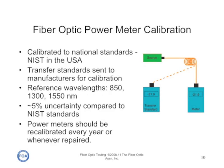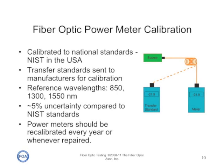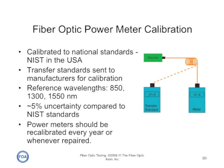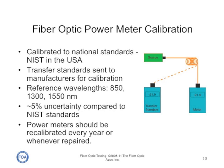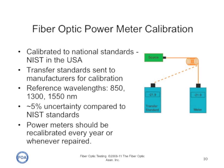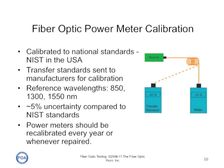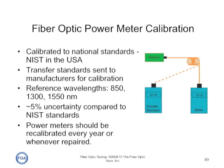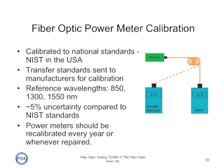Fiber optic power meters are calibrated to national standards, like NIST in the US, using transfer standards sent to manufacturers for calibration. NIST provides standards calibrated at 850, 1300, and 1550 nanometers, and manufacturers adjust their calibrations to agree with those standards. However, the process of transferring standards to manufacturers means there's typically about a five percent uncertainty compared to NIST standards. Meters should be recalibrated every year or whenever repaired.